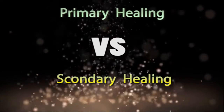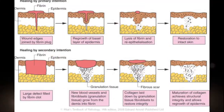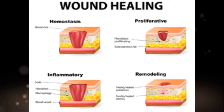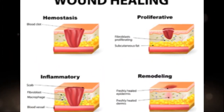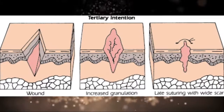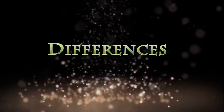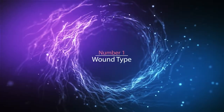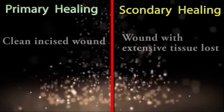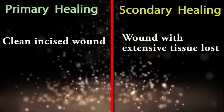Wound healing is a physiological response to tissue trauma. There are three main types: primary healing, secondary healing, and tertiary healing. In this video, we will discuss the differences between primary healing and secondary healing. Difference number one is wound type: primary healing can be seen after a clean incised wound, but secondary healing can be seen in wounds with extensive tissue loss.